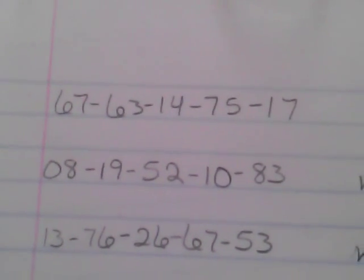We're looking at the first combination, which is 67, 63, 14, 75, 17. 67, the 6 is going to V track into a 2, the 7 is going to V track into a 3. So the V track lottery number 67 is going to be 23.